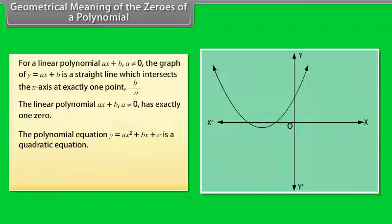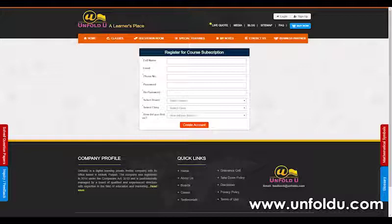+ c is a quadratic equation. The graph of a quadratic equation is a parabolic curve. Subscribe to Unfold U today